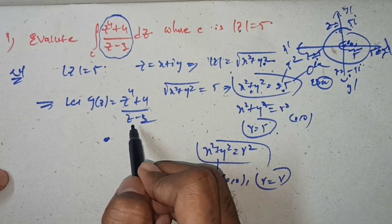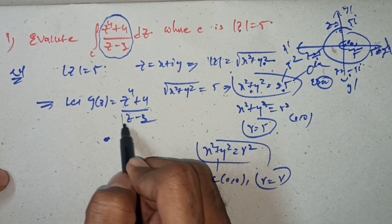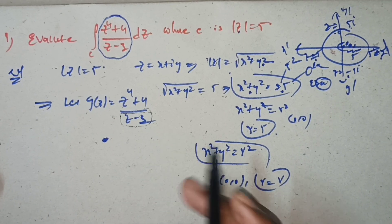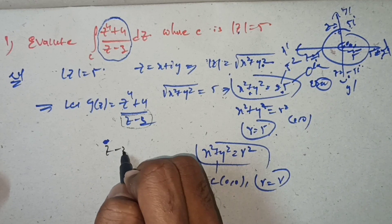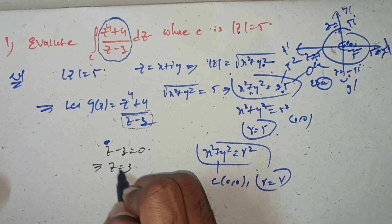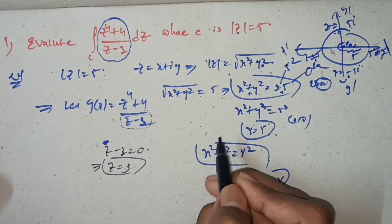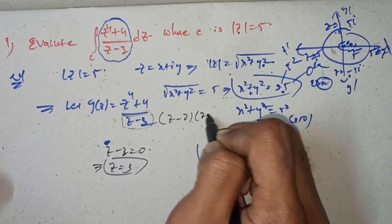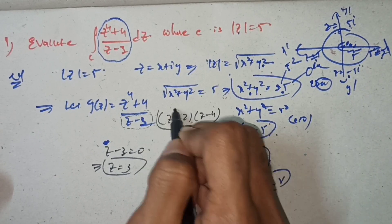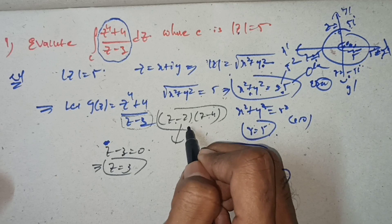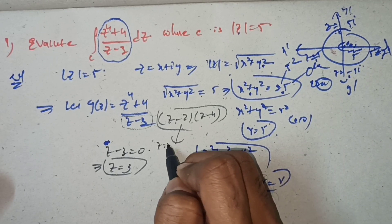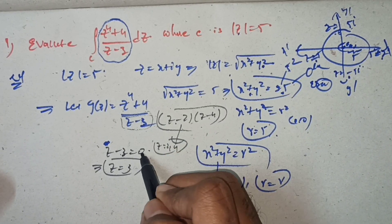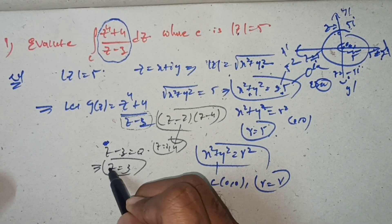For the singular point, we set the denominator equal to zero. So z − 3 = 0, which gives z = 3. Therefore, z = 3 is the singular point.